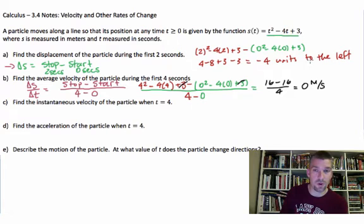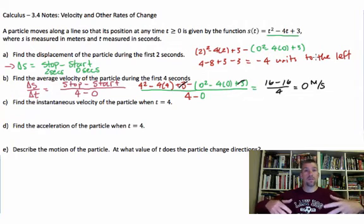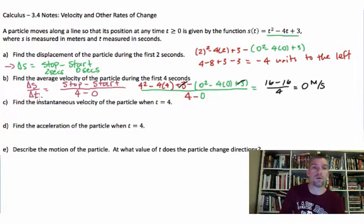What's the instantaneous velocity of the particle when t is equal to four? Now this is where it gets interesting because my average over the entire first four seconds was zero. Basically I have a velocity of not moving on average. So what about instantaneous? What's going on when t is equal to four? When t is equal to four, what's my speed? What's my velocity?